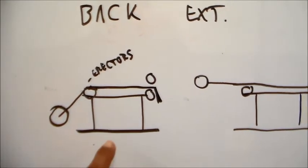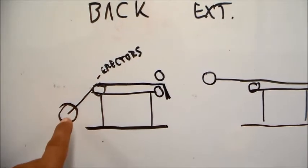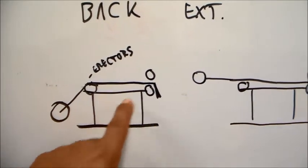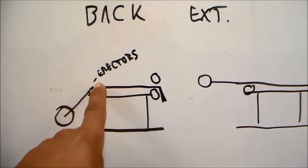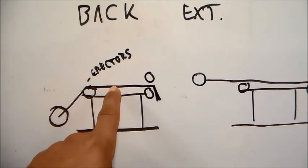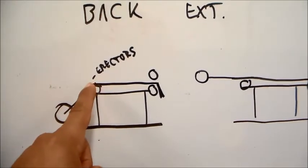Back extension. This is the start position. Our head is rested here, our feet are here, and we bend from the erectors. We don't bend at the hips, we bend at the erectors.